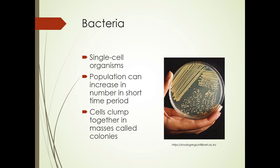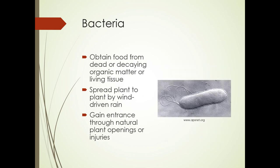Bacteria are single-cell organisms. They can increase in number in a very short period of time, and when they clump together in masses, you call it a colony. They obtain food from dead or decaying organic matter or living tissue. They spread plant to plant by wind-driven rain and gain entrance through natural plant openings or injuries.